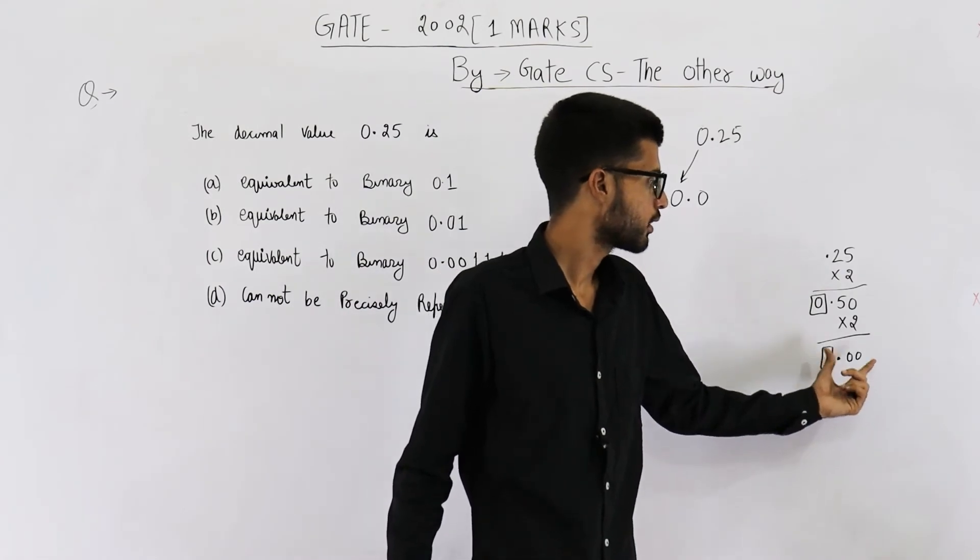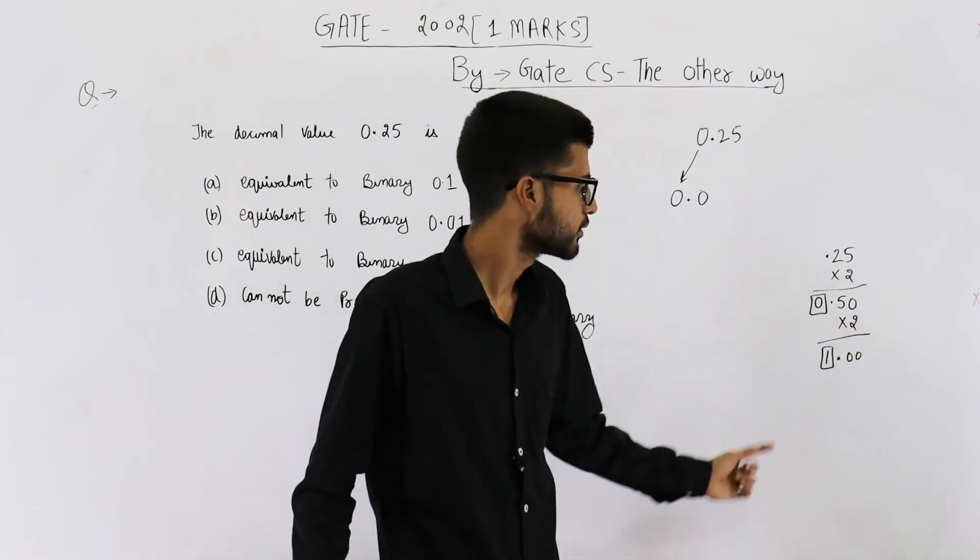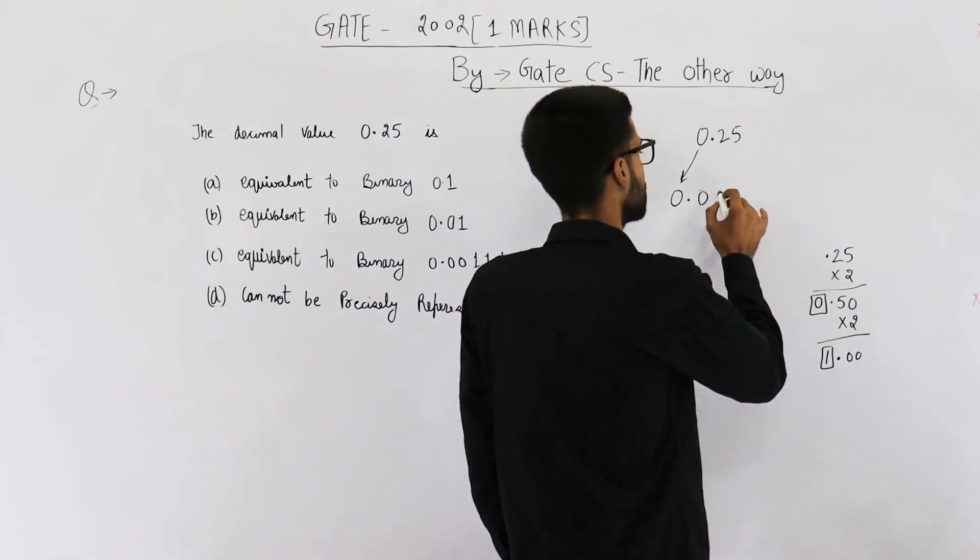The answer that you get upon multiplying 0.5 by 2 is 1.0. That means the next digit that you are going to write here is 1, and we have got 0.00. That means we can stop here.